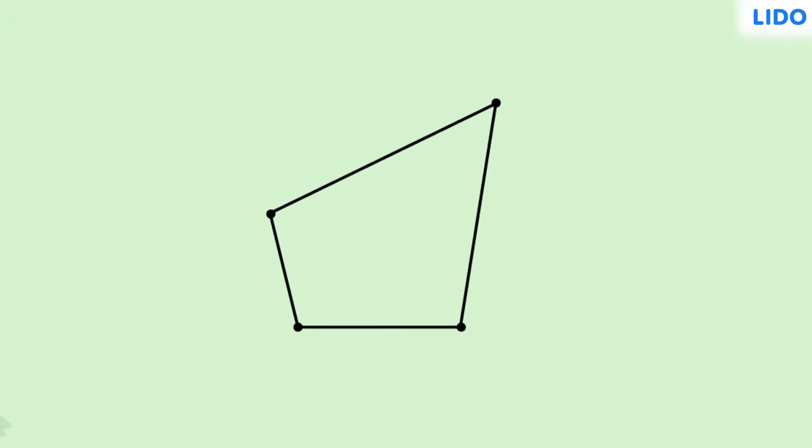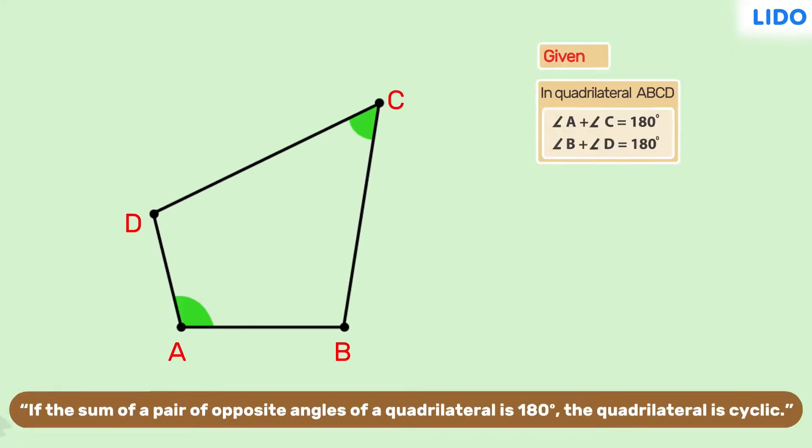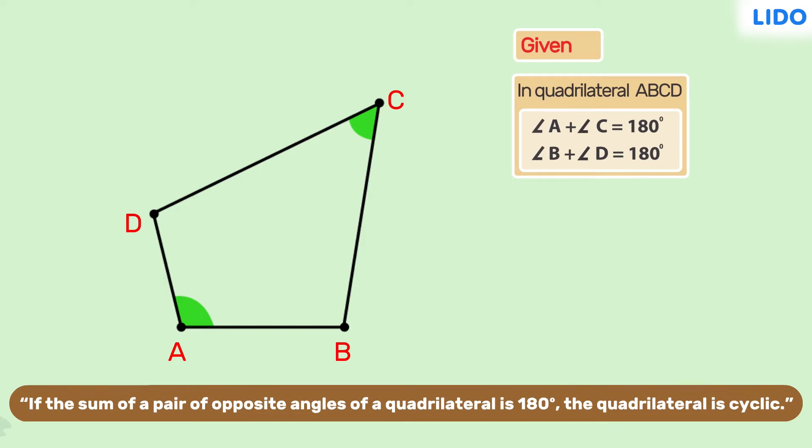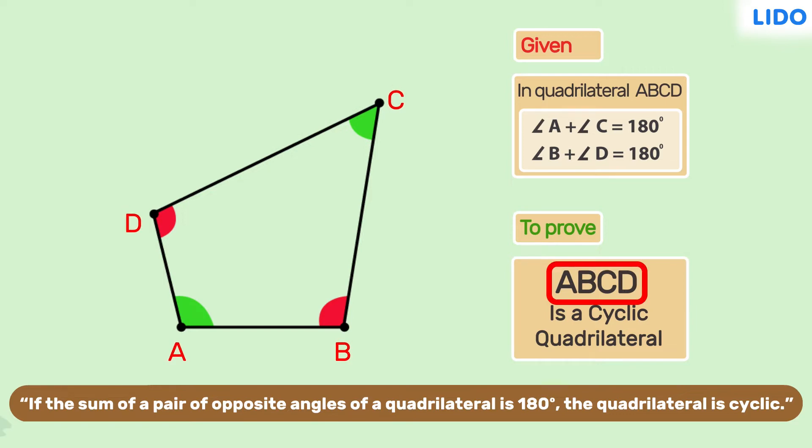Let's prove that. Let's begin by taking a quadrilateral A, B, C, D in which the sum of angles A and C and the sum of angles B and D are equal to 180 degrees. And we have to prove that vertices A, B, C, and D lie on a circle. Observe that none of these points are collinear as they are the vertices of a quadrilateral.